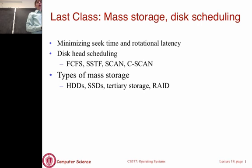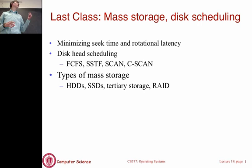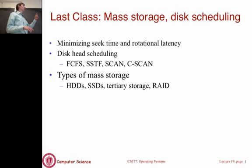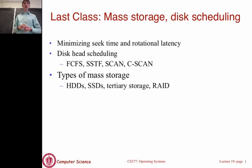Today we're going to finish talking about I/O systems. Last class we were mostly talking about disk scheduling and various types of disk storage. We covered algorithms for disk scheduling starting from first come first serve, then shortest seek time first, and the two variants of the elevator approach. We also talked about different types of mass storage: magnetic hard drives, solid state drives, archival drives like tapes, and finally RAID arrays.